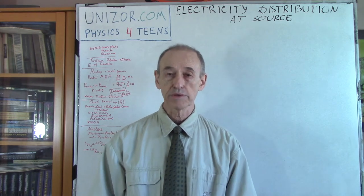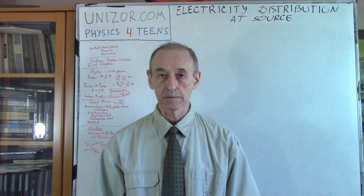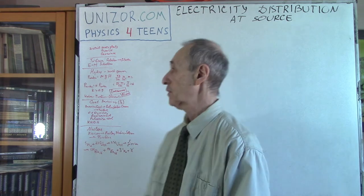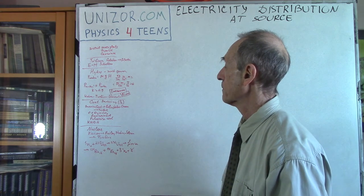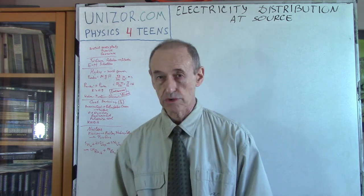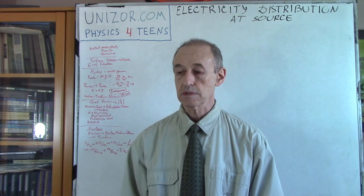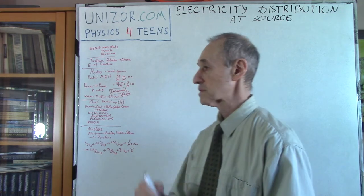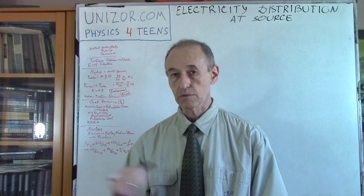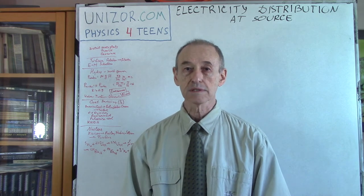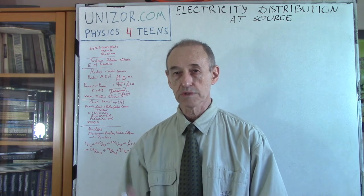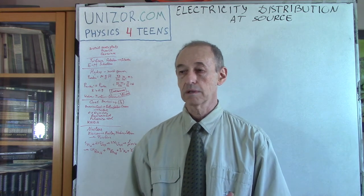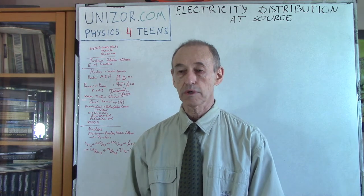I'll briefly address the main principles of each type of plant. Let's start with hydroelectric stations. Hydroelectric stations are based on the principle of falling water, which falls onto a turbine. The turbine rotates, and that rotation is the main source of producing electricity. How can we get the falling water? There are two different ways.